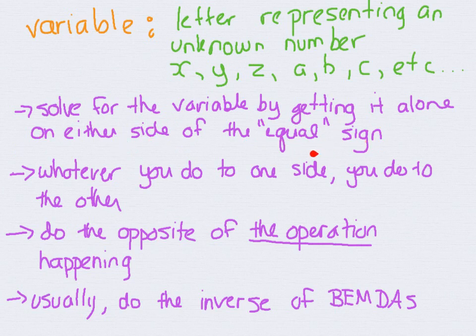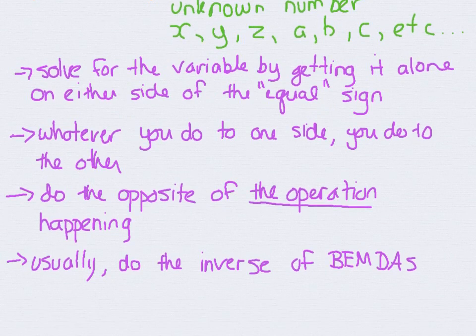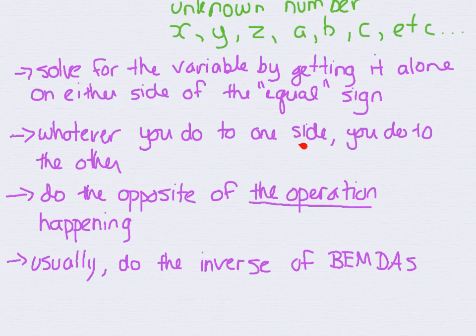Which means it doesn't matter if your variable is on the left or the right side — we just want it to be alone. More often than not though, we usually solve for the variable by having it on the left side. Next, it's important to remember that whatever you do to one side, you have to do to the other side of the equal sign.